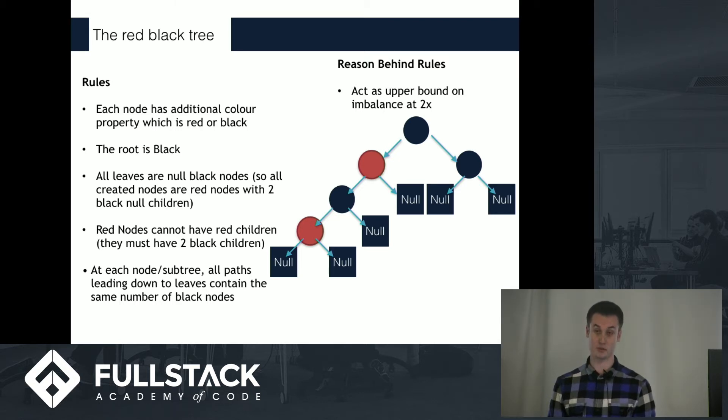And at each node or subtree, all paths have the same number of black nodes down to the bottom. It's really the last two rules that are important takeaways. When we combine those rules, what we're doing is setting an upper bound on how imbalanced the tree can be.